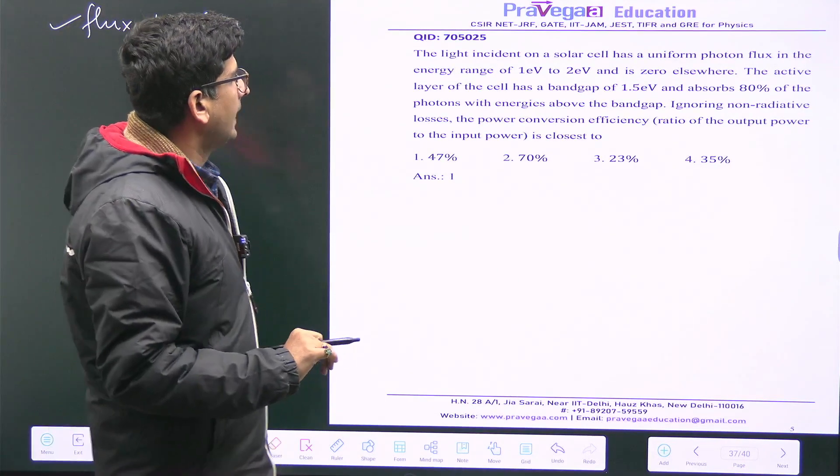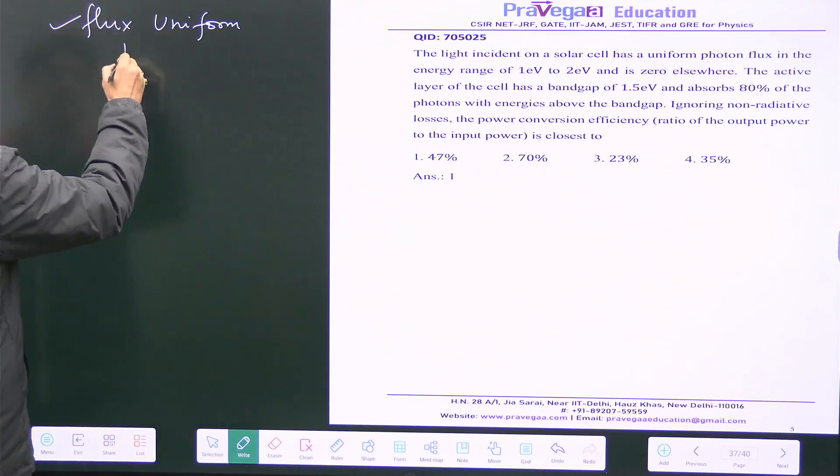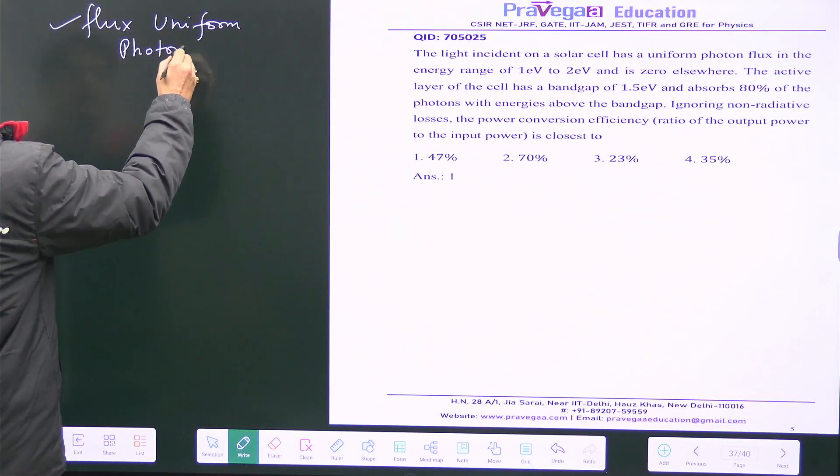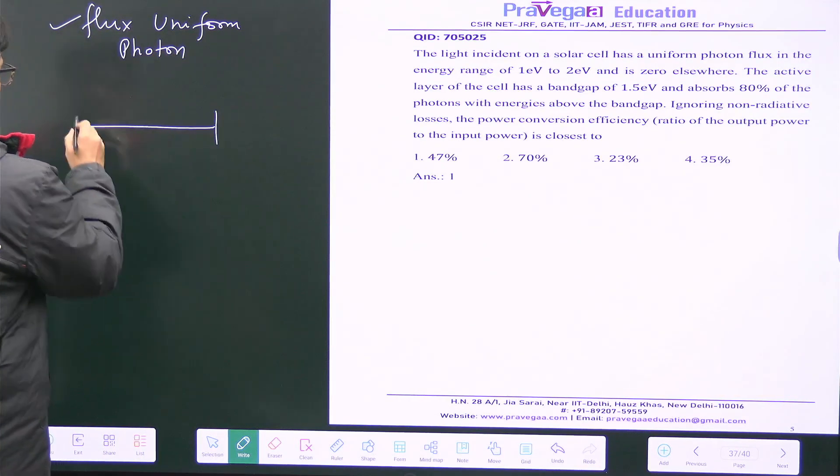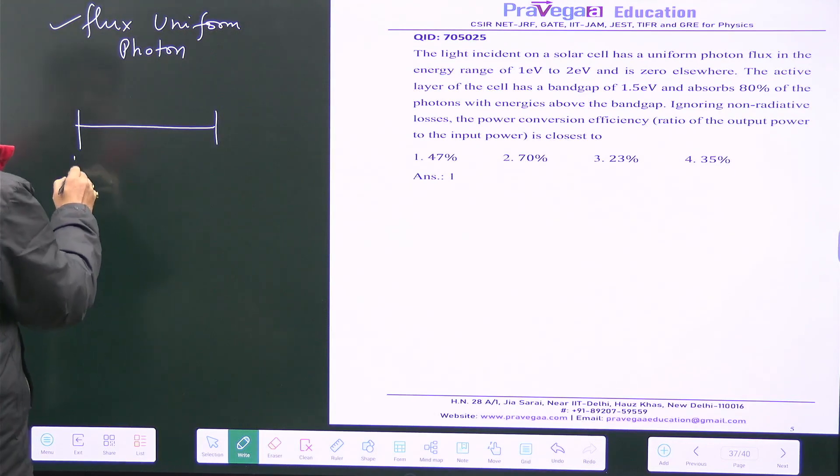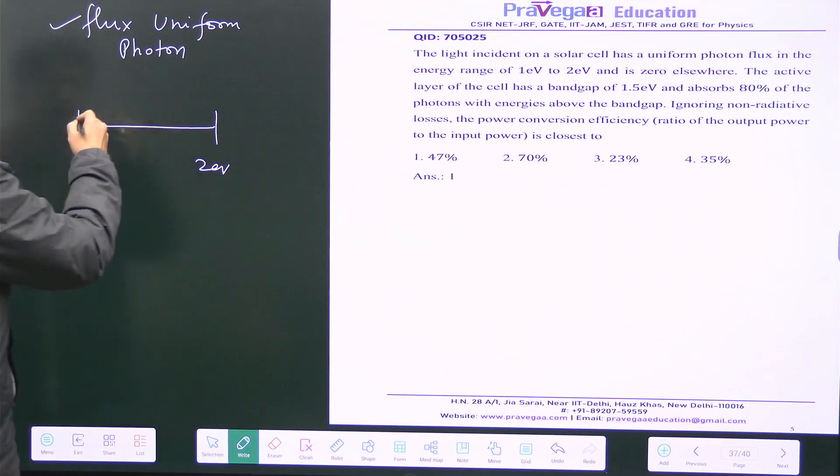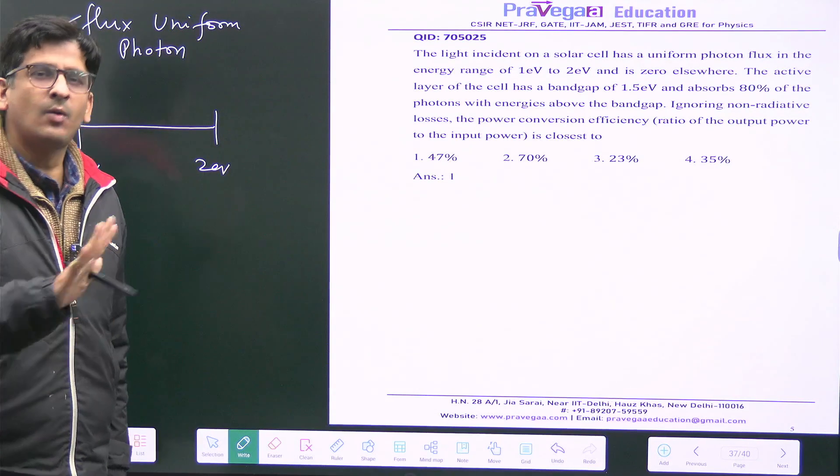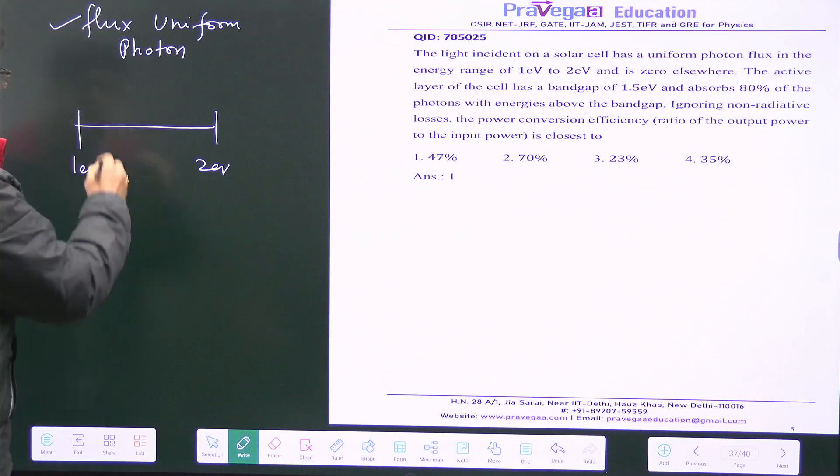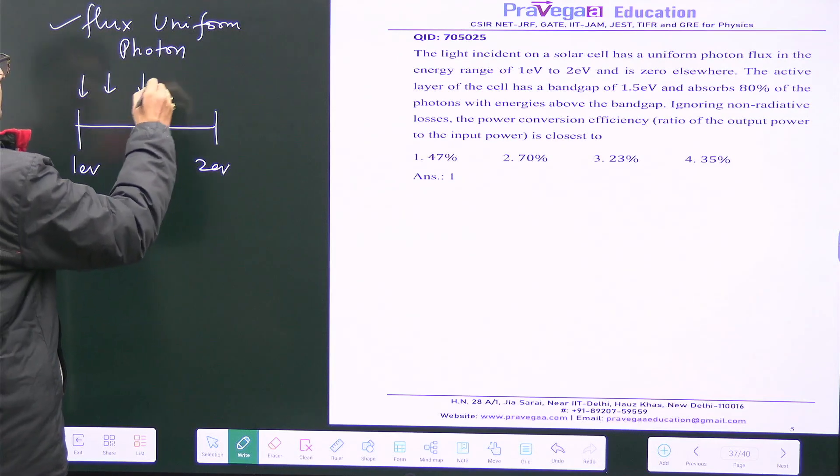That means for every energy we have equal distribution of photons. So photons are equally distributed, equally available to all of these energies from one to two electron volt.